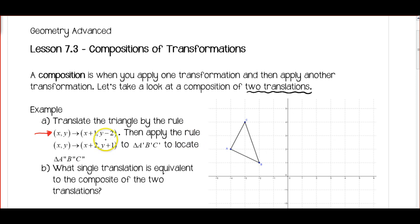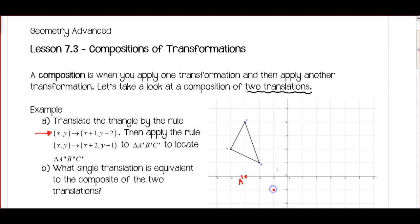Once I do that I'm going to apply the next rule, but let's do the first one. Starting at point A — x values plus 1, so move to the right 1, then y values subtract 2, so move down 2. Here's my new A prime. Same thing with B: to the right 1 and down 2 — here's my B prime. And for C: to the right 1 and down 2 — here's my C prime.